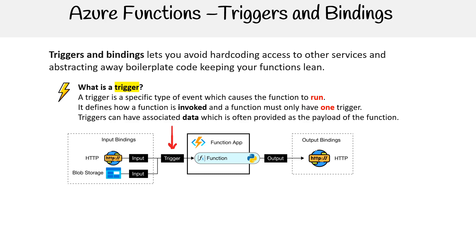As we saw in the introduction, we can have multiple sources of inputs added there. In this example, we have HTTP, and we're bringing in data from blob storage as well. The main trigger is HTTP, which is an input as well, so you can have additional inputs at the same time.